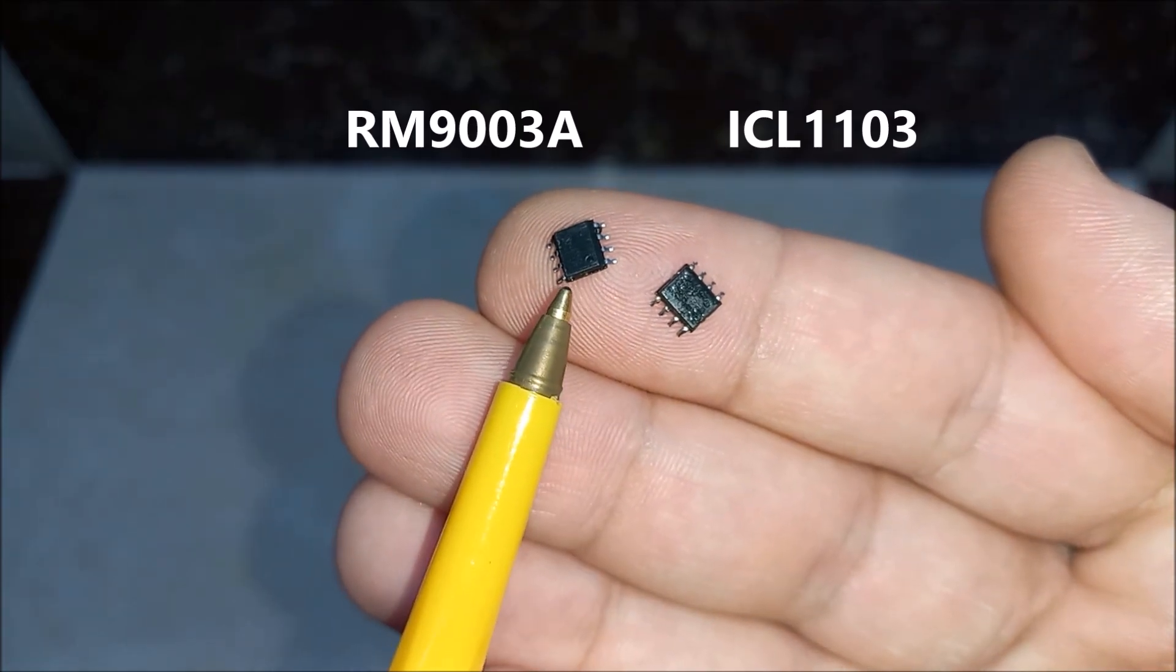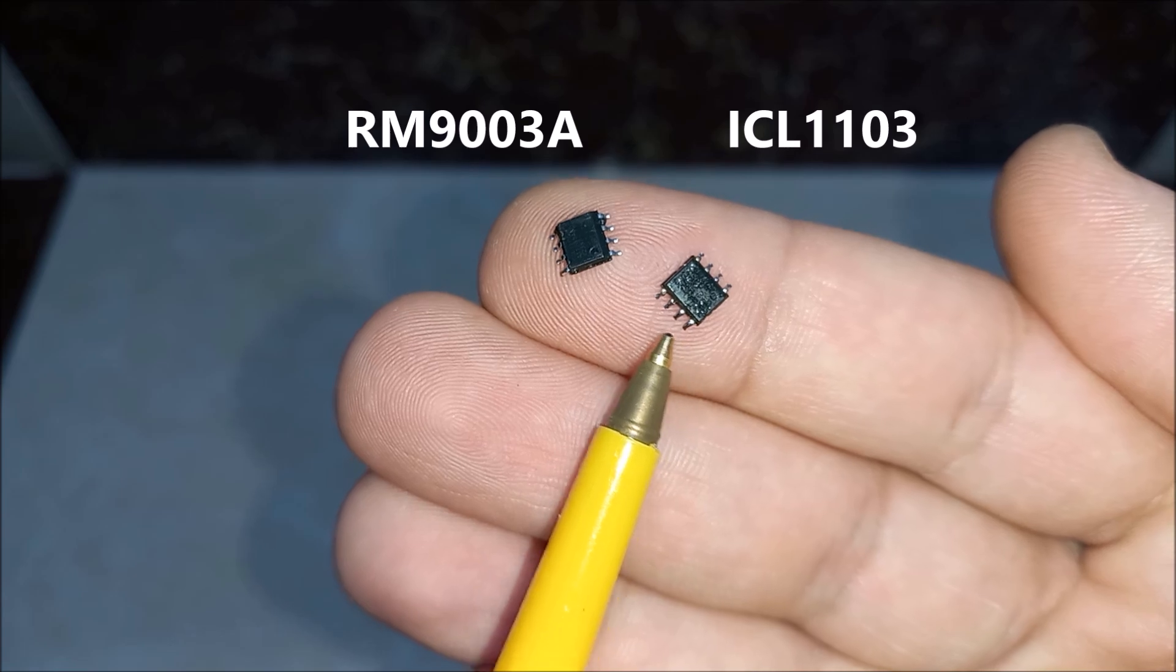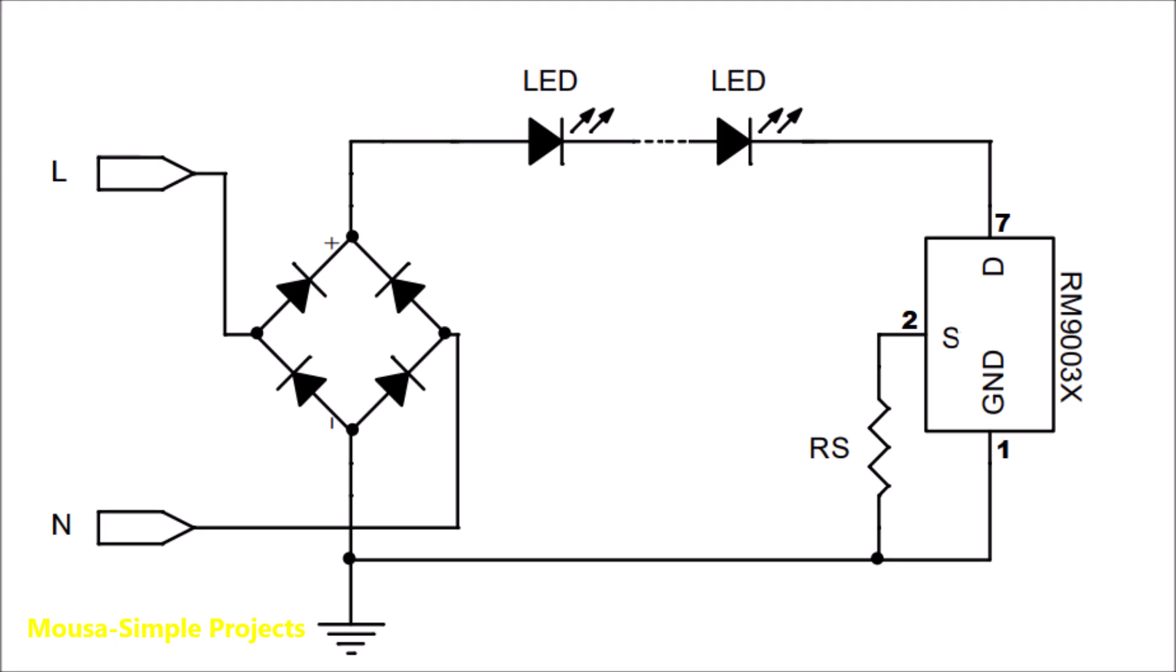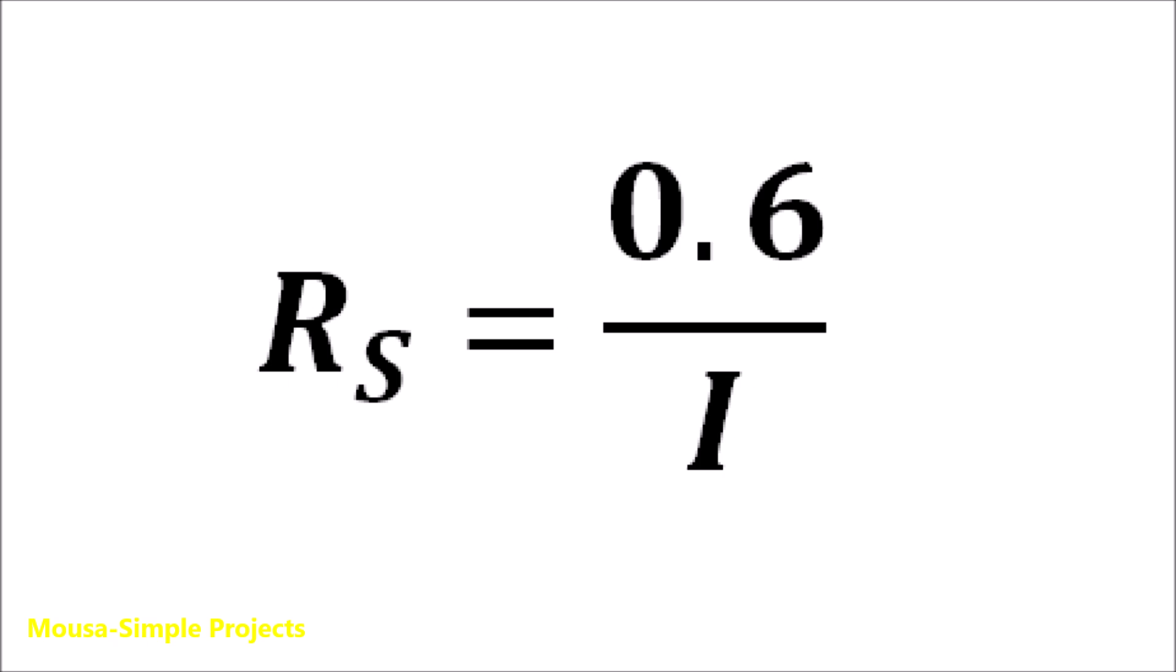This IC could be RM9003 or ICL1103. The output current depends on the value of this resistor. You have to calculate the proper value by using this formula.